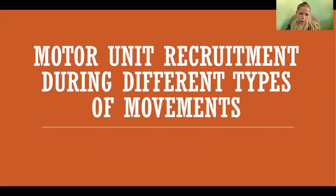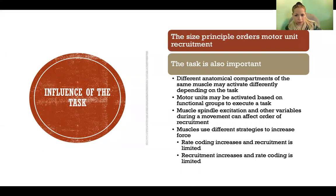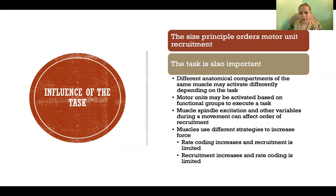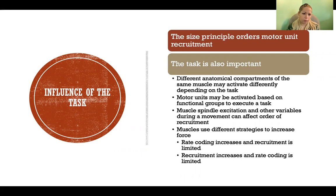Hello. In this video I'm going to talk about motor unit recruitment during different types of movements. We know that the size principle orders most of our recruitment, so motor unit recruitment occurs in order from smallest motor neuron to largest motor neuron. That's different from the size of the motor unit itself — a motor unit is small if it has only a few fibers or large if it has many fibers. The size principle says motor neurons are recruited smallest to largest regardless of motor unit size, but this doesn't always hold true — and we'll talk about where there are some differences.